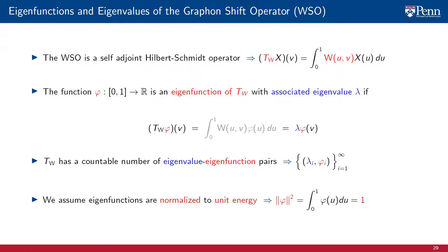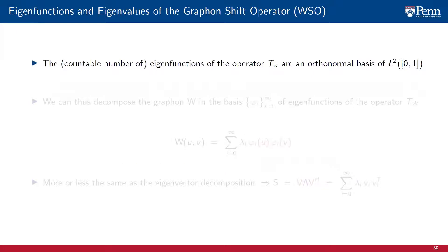For future reference, we observe that we assume the eigenfunctions to be normalized to unit energy. That is, the L2 norm of the eigenfunction phi_i is equal to 1. The eigenfunctions phi of the graphon shift operator TW form an orthonormal basis of the space L2. That property will be fundamental to construct a graphon Fourier transform capable of decomposing a graphon signal on the basis made up by the eigenfunctions of the graphon shift operator, as we will see in a few minutes.